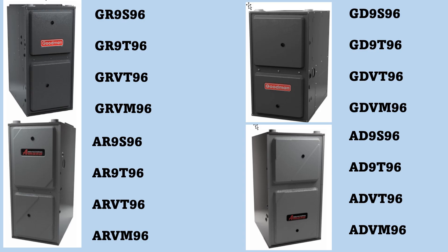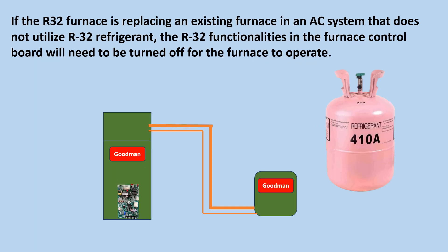All of the new Goodman and Amana R32 gas furnaces, whether from 80% to 97%, are equipped with a control board capable of shutting off the gas heat and turning on the blower fan in case of an R32 refrigerant leak in the indoor evaporator coil. If the R32 furnace is replacing an existing furnace in an AC system that does not utilize R32 refrigerant, the R32 functionalities in the furnace control board will need to be turned off for the furnace to operate.